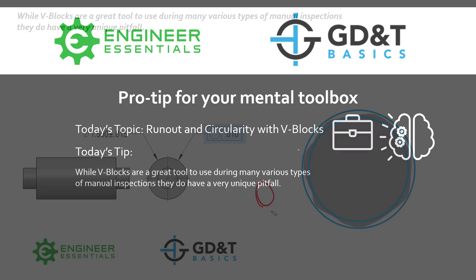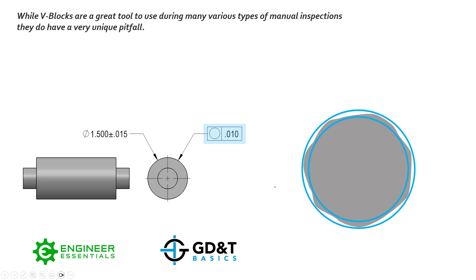Let's take a look at this example. We have a simple cylinder with two bosses on either side. We have a large diameter of 1.500 plus or minus 15 thousandths. As we all know, Rule Number One would actually control the circularity error of this cylinder based on this size dimension to 30 thousandths of circularity or cylindricity — however, we've refined that down to 10 thousandths.